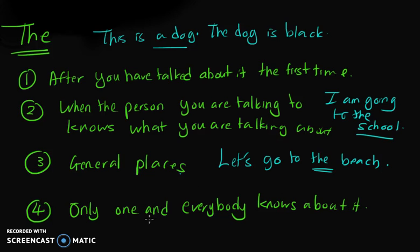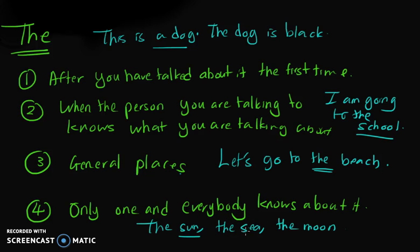For example: the sun, the sea, the moon. Everybody knows about it, and there is only one sun — or maybe not really the sea — but the moon. There is only one moon and there is only one sun.